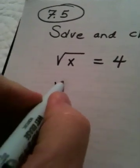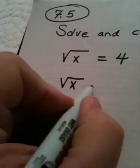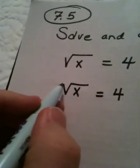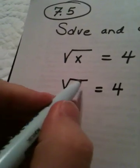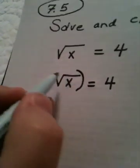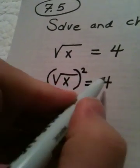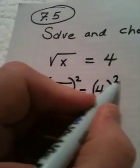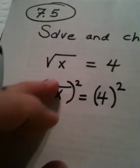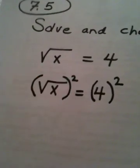And the best way to do that, here's my original problem. If I want to make a square root disappear, I use the inverse operation. And remember, the inverse operation to square rooting would be to square it.